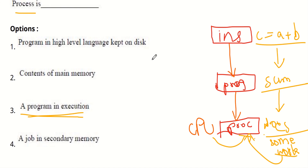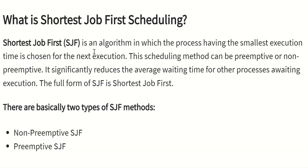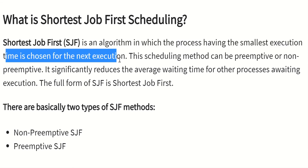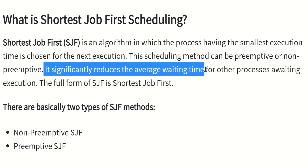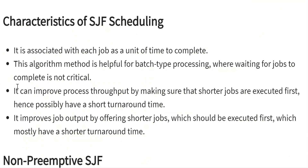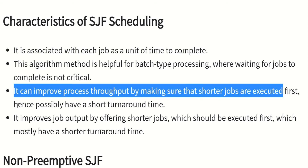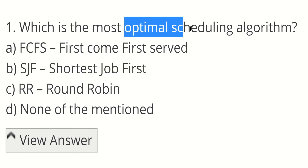Now the bonus answer: which is the most optimal scheduling algorithm — FCFS, SJF, Round Robin, or none? The answer is SJF (Shortest Job First), because the process with the smallest execution time is chosen for next execution. This method can be preemptive or non-preemptive. It significantly reduces the average waiting time for other processes and improves process throughput by ensuring shorter jobs are executed first, hence achieving the shortest possible turnaround time.